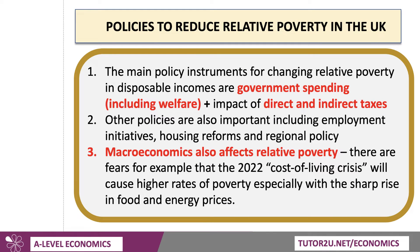So what policies can be brought to play to try to reduce relative poverty, assuming that this is one of the aims of macroeconomic and microeconomic policy? The main policy instruments are government spending, including welfare, and the impact of direct and indirect taxes. Other policies are also significant, including jobs policies, employment initiatives, housing reforms, and regional policy.